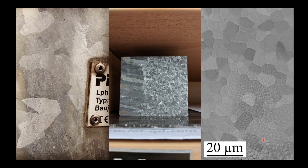Before we learn what grain boundaries are, we need to understand what grains are, and these grains can be visible in your day-to-day life. For example, on an electrical pole that has been galvanized, you see these weird shapes that are seemingly separated — those individual shapes are called grains. You can also see them in metals like aluminum alloy, at a scale of 10 to 20 microns, or even smaller in the nanometer range in nanocrystalline alloys or metals.